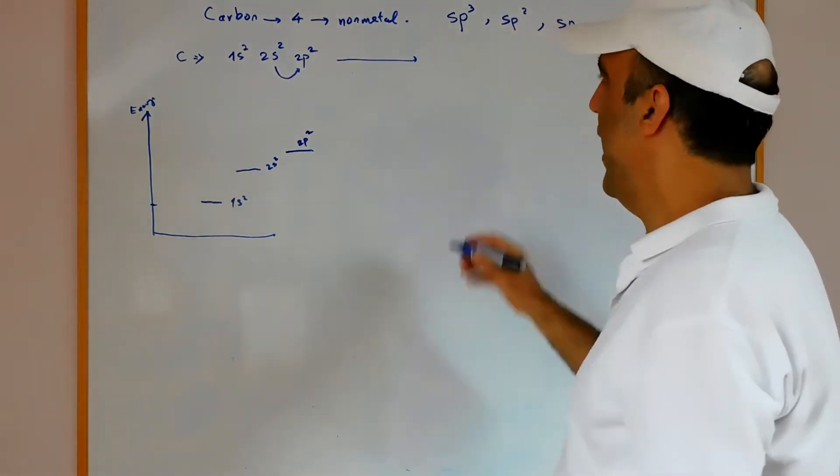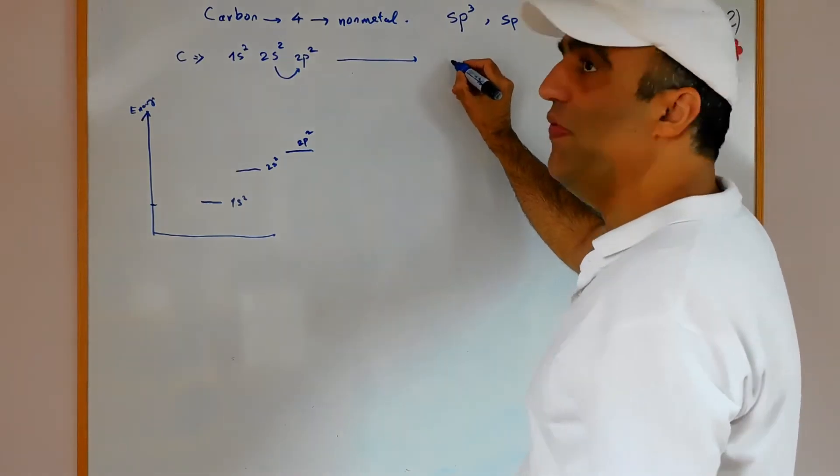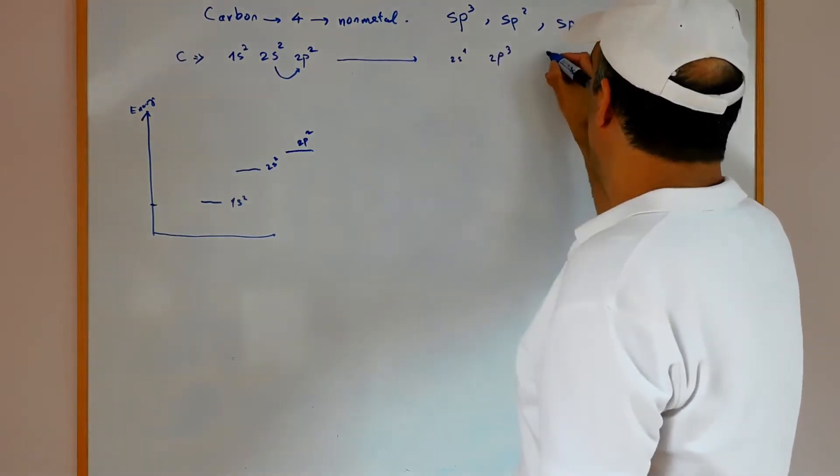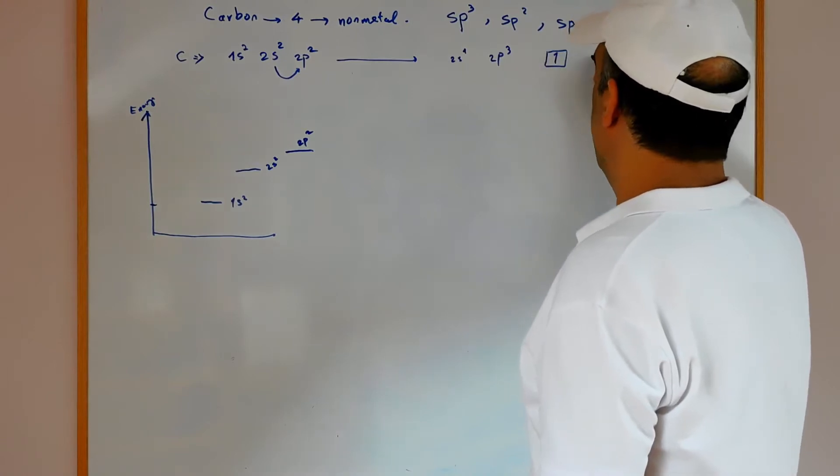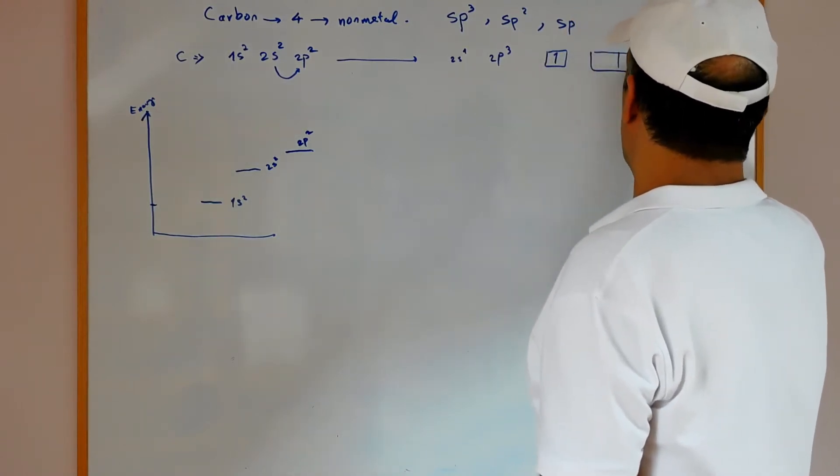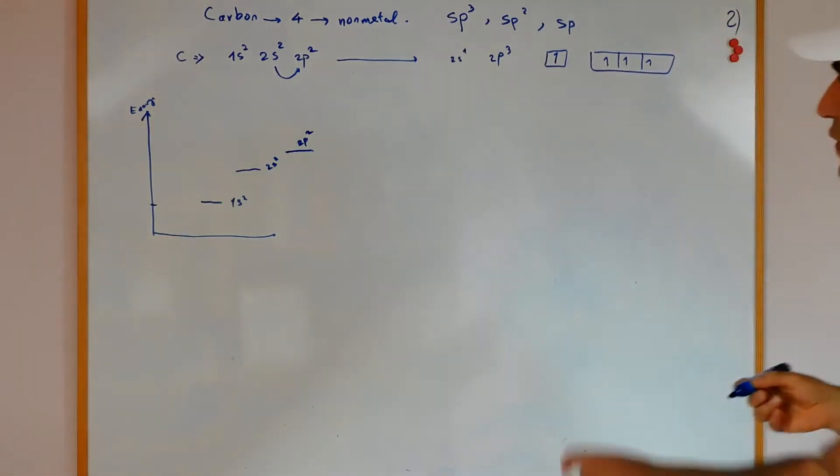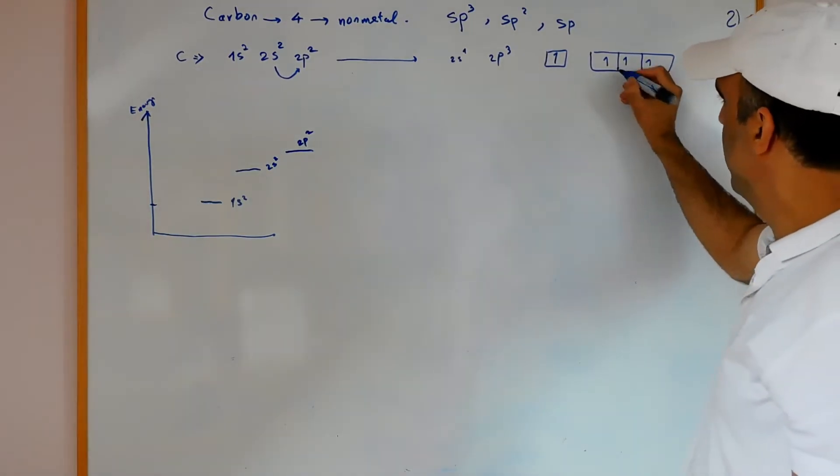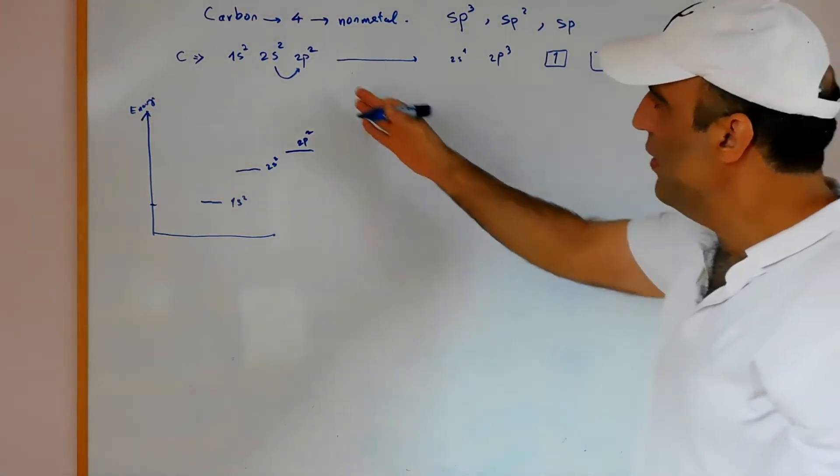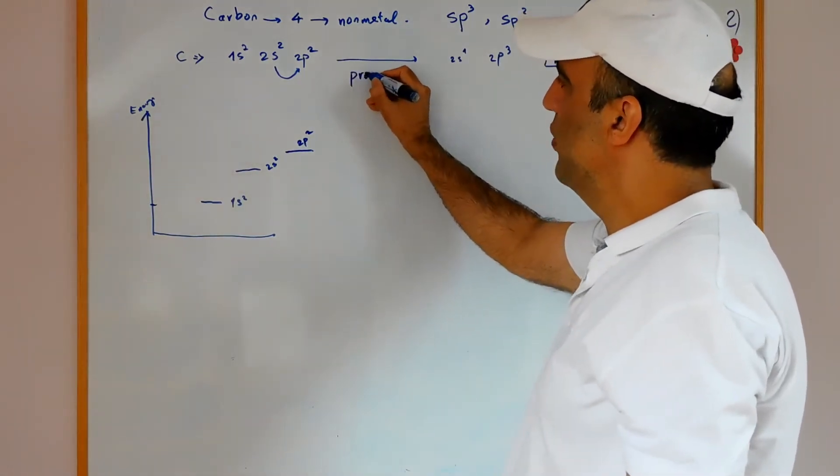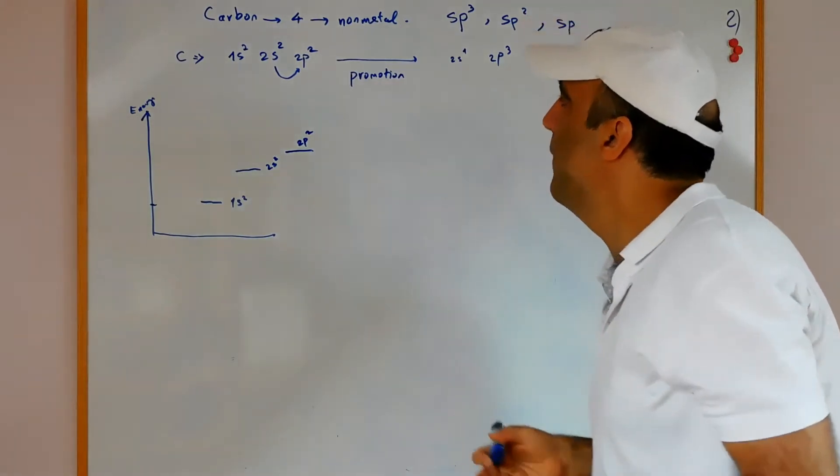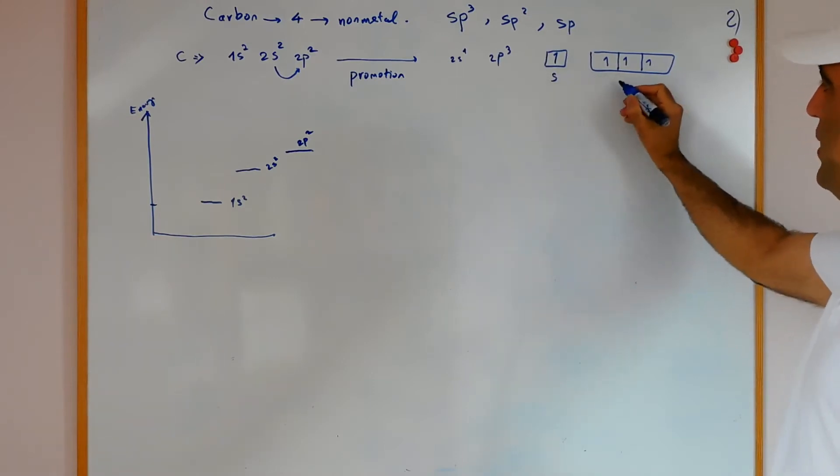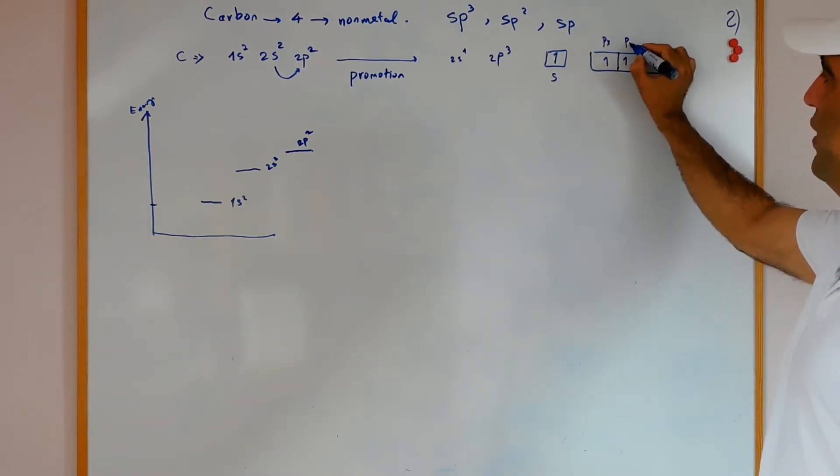In this situation we will have in the last valence shell 2s1 and 2p3. In the 2s1 there is one electron and in 2p3 there are three electrons. The half valence of p is full and this is stable. This process is called promotion.